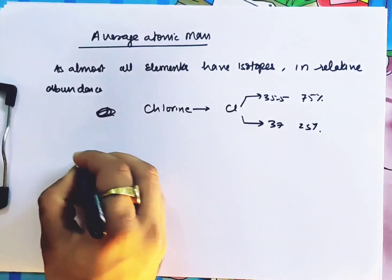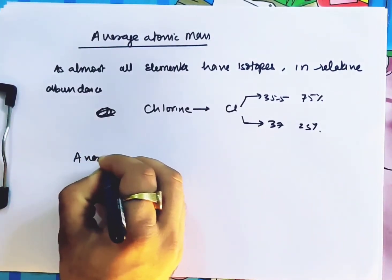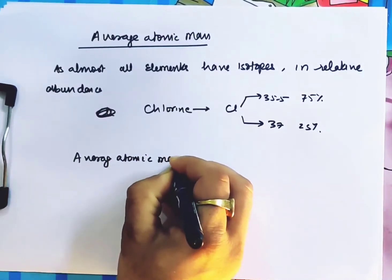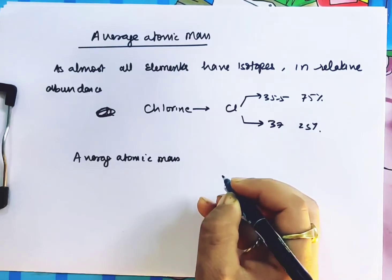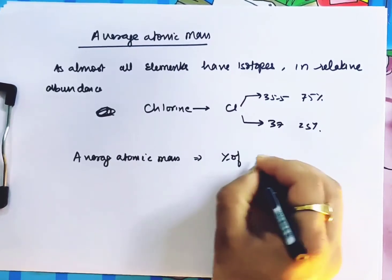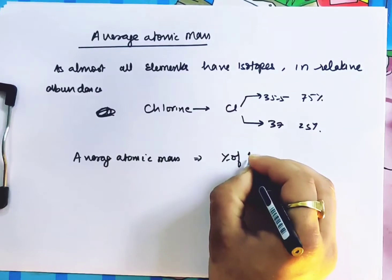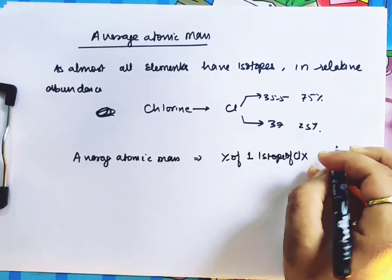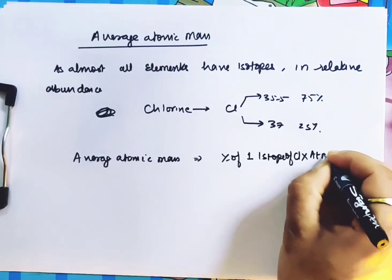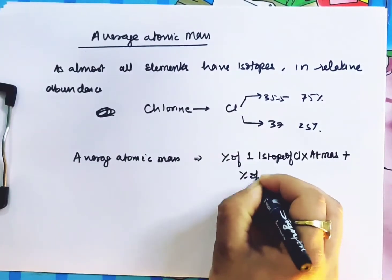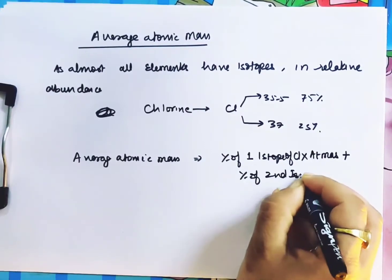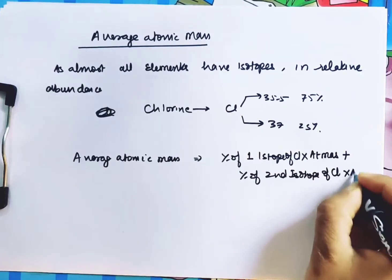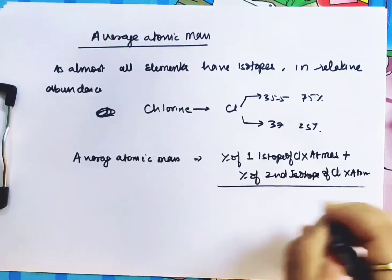So the average atomic mass is given as: percentage of one isotope of chlorine into its atomic mass, plus percentage of the second isotope of chlorine into its atomic mass, divided by 100.